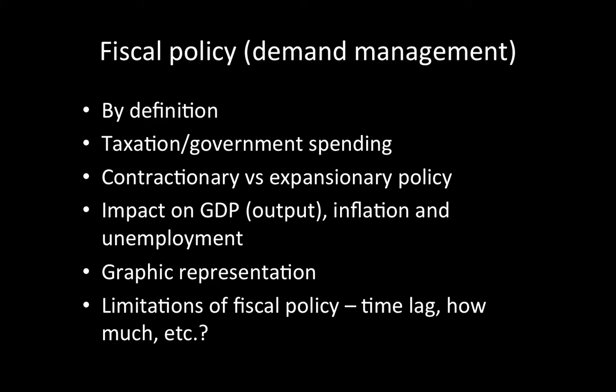Understand that fiscal policy consists of taxation and government spending — that can be taxation indirect or direct, on consumers or on businesses. Also think about what the government spends money on, and then when they increase spending what happens and when they cut back spending what happens. Contractionary versus expansionary policy essentially looks at when the government decides to increase or decrease aggregate demand.